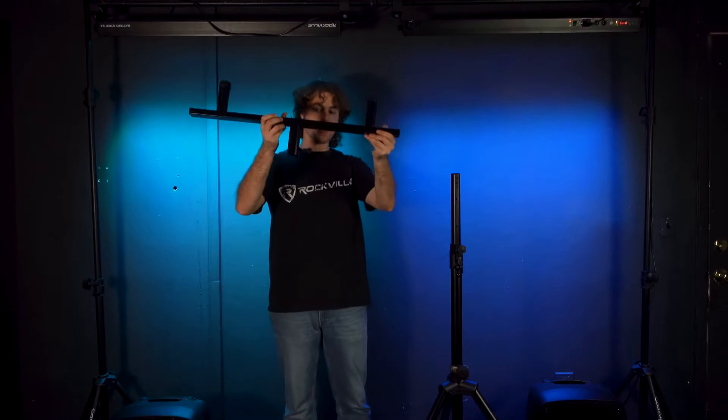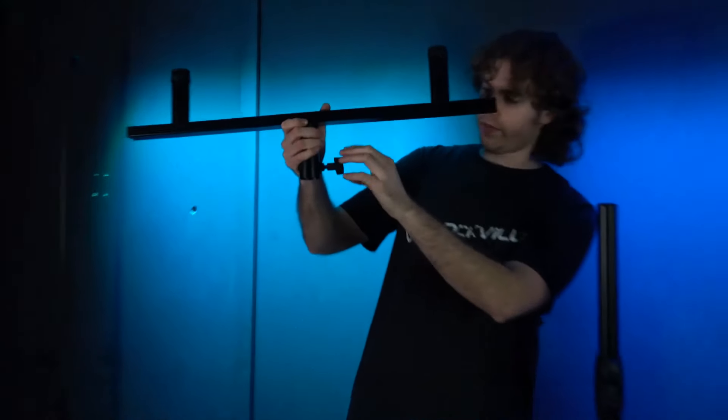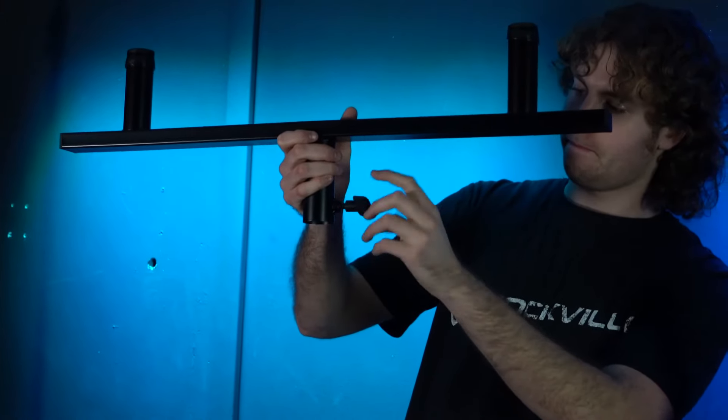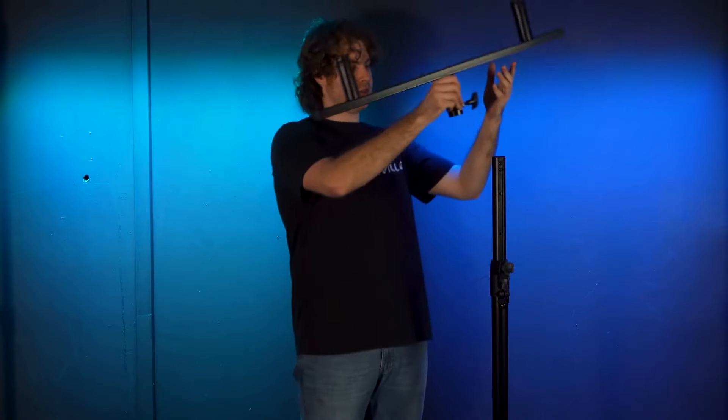Take your DP mount and start by loosening this knob on the side. Then line up the hole on the bottom of the mount to the pole on the top of your stand.